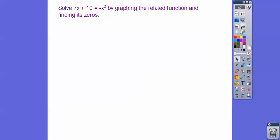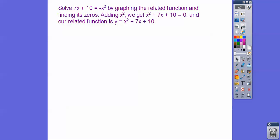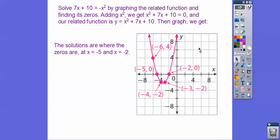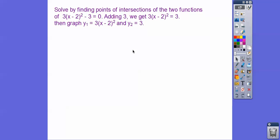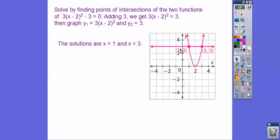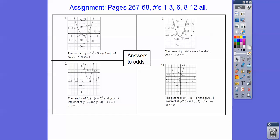One more: solve by graphing the related function and finding the zeros. We add x squared to both sides to set it equal to zero, then graph the parabola — it crosses the x-axis at x equals negative 5 and x equals negative 2. And for solve by finding points of intersection: set it equal to 3, graph the parabola on the left and the horizontal line y equals 3 on the right. They intersect when x equals 1 or x equals 3. That's your sign — take care.